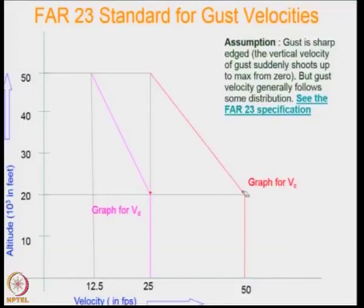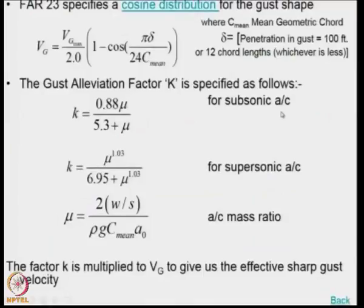In this particular discussion, we are assuming that the gust velocity is sharp. That means the gust velocity suddenly reaches a value of 25 feet per second from 0. But that is not true. Actually, the gusts are going to increase very slowly. To take care of that, the airworthiness regulations normally prescribe a distribution that has to be considered for the gusts.